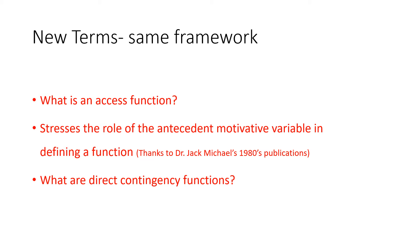Another term you might wonder about is the direct contingency function. There are two of them — one for access and one for escape. These involve behaviors that produce the desired reinforcer directly without social mediation. The terminology used in most of the behavioral literature is 'automatic.' I didn't want to use that primarily because everybody who referred to automatic reinforcement seemed to be talking about sensory events only, and there is so much more.